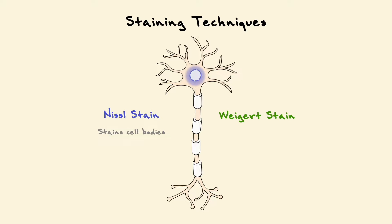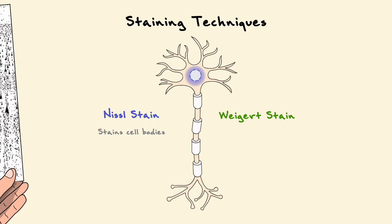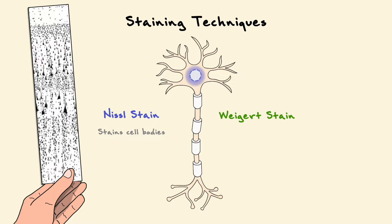As a result, if one uses the Nissel stain on the grey matter of the cortex, the result will be the following. As you can see, the cortex is filled with cell bodies of different shapes and sizes. More formally, the study of the cellular properties of the grey matter in the CNS is called cytoarchitecture.